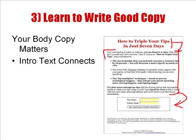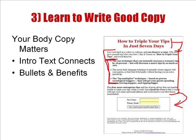The top part is introductory text — it needs to connect with the reader and transition somebody from the headline into the rest of the message. Then you have your bullets and benefits, which lay out specific things that are part of the offer. For example, it talks about a technique that can instantly increase a woman's tip by 18%, but will decrease a man's tips by as much as 10%. These bullets need to connect to the benefits you're offering. And then you're going to have a call to action — that's the paragraph right above the form.